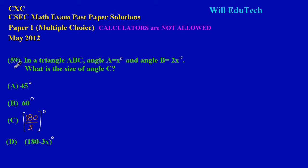Question 59 states: In a triangle ABC, angle A is equal to x degrees and angle B is equal to 2x degrees. What is the size of angle C?